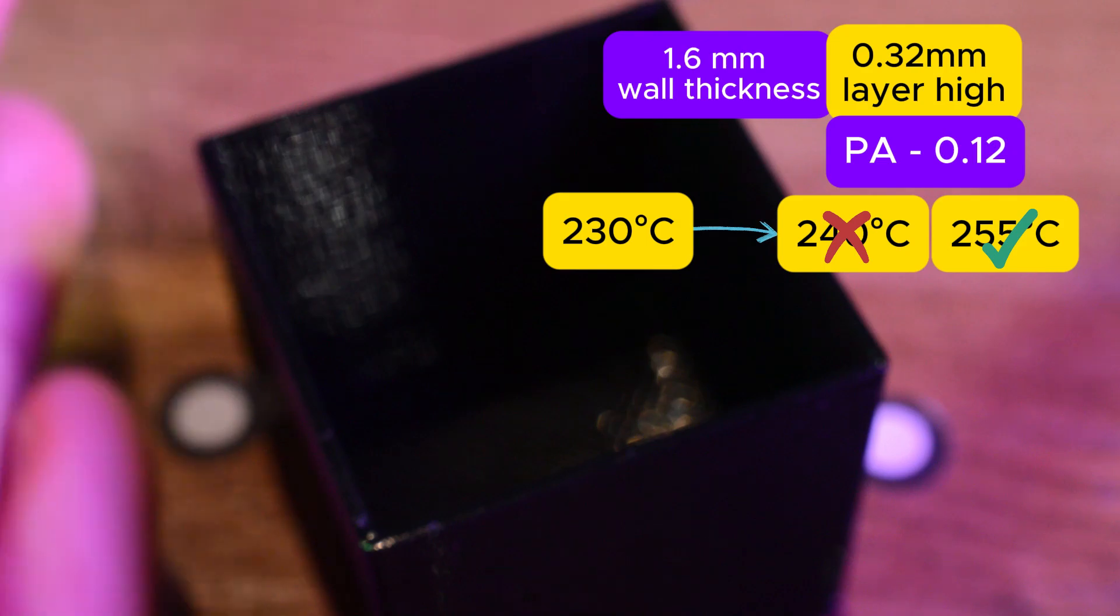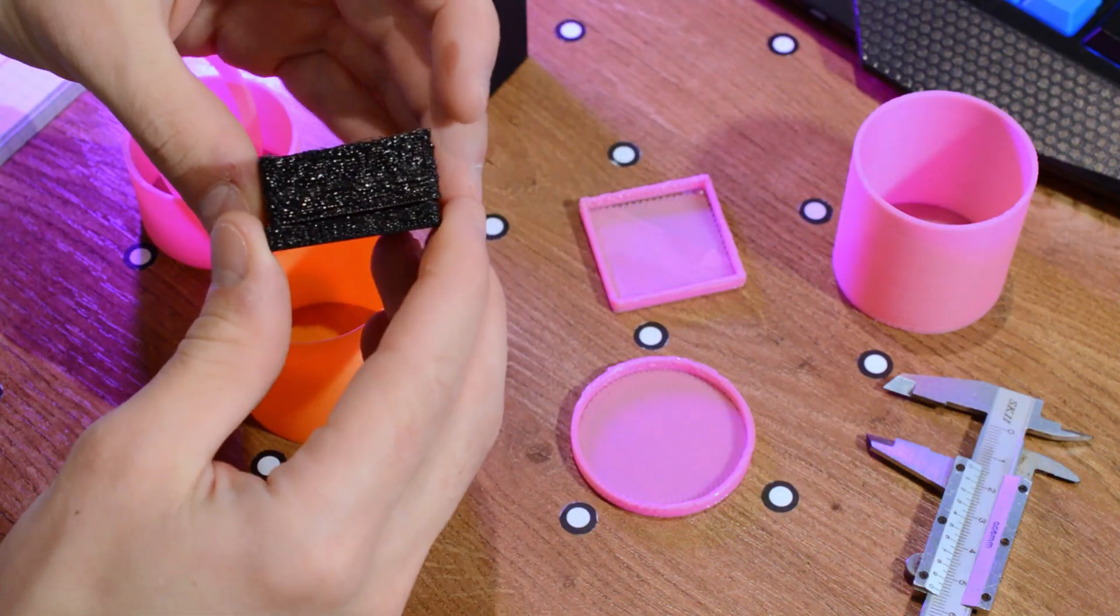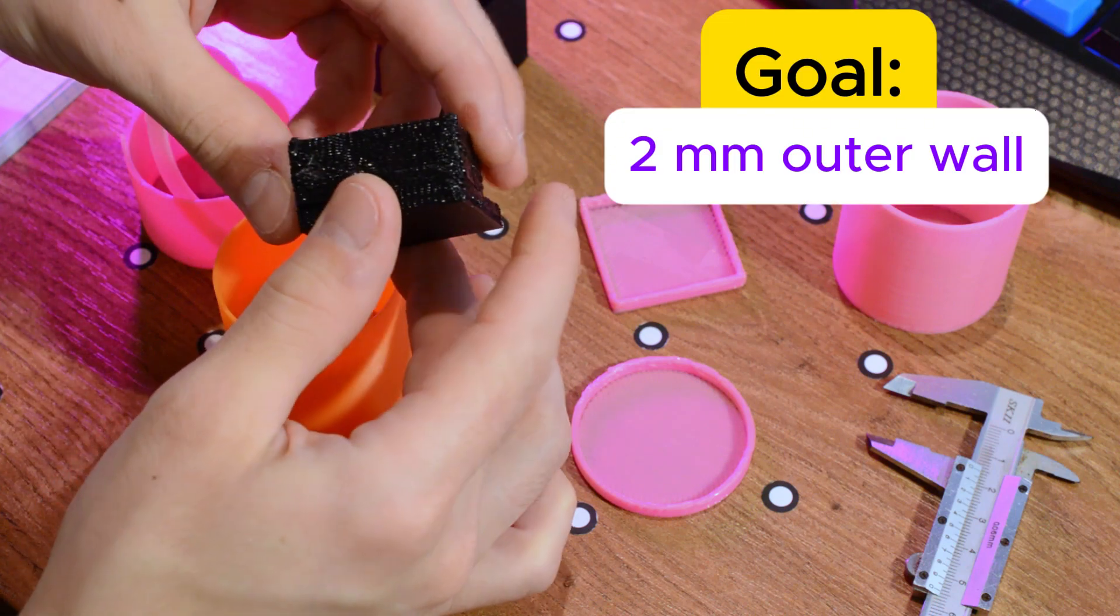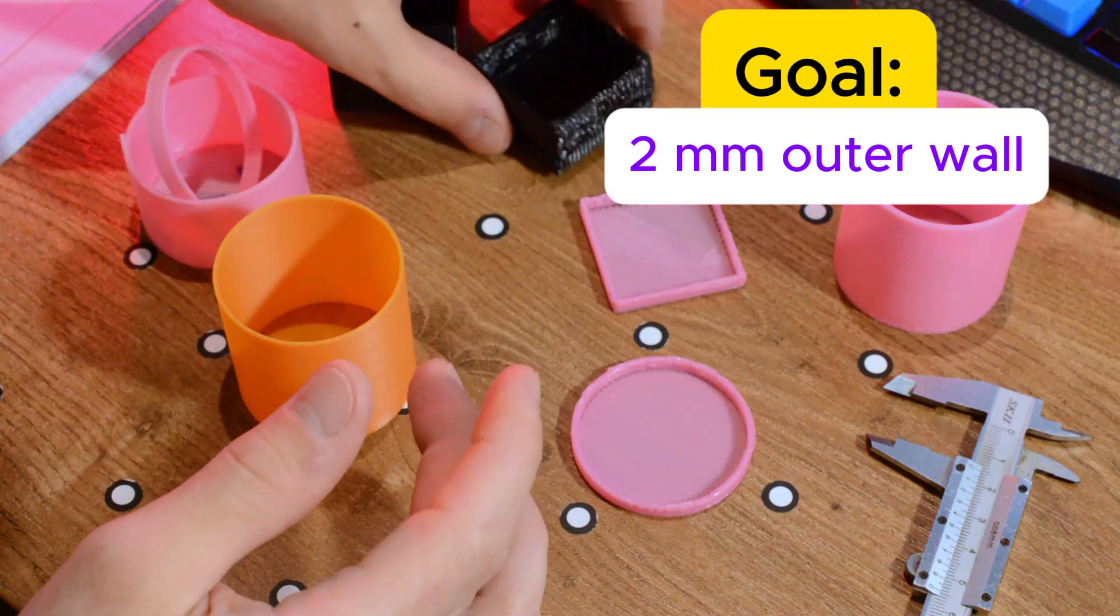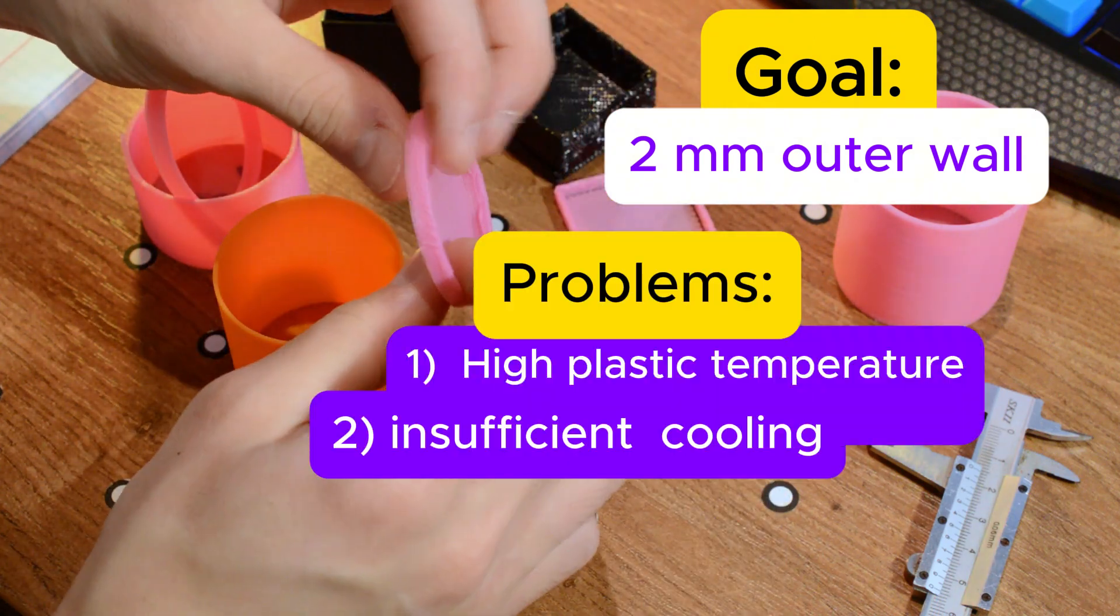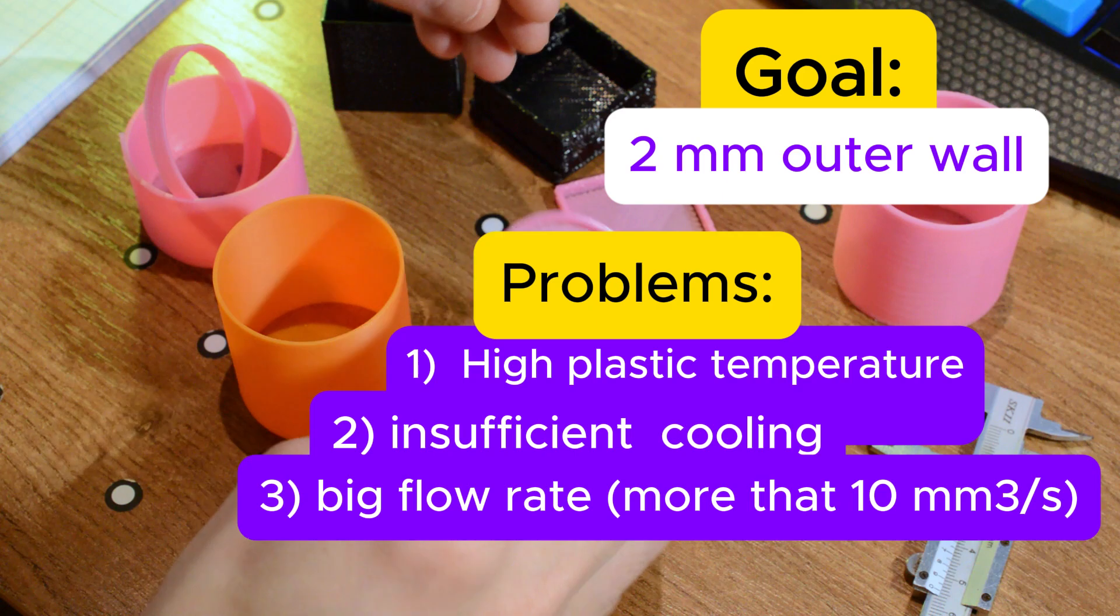Quality issues were gone by then. Next few tests were all about printing with 2 mm line width, which was the main goal of today's experiment and that is where I met some difficulties, like too high temperature or not enough cooling or too big flow rate.